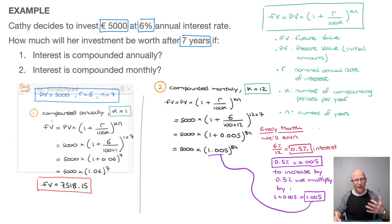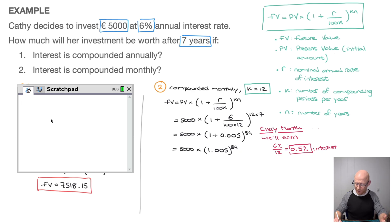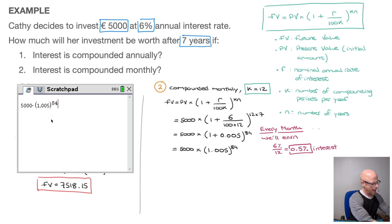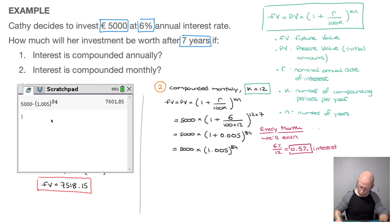Let's go back to the calculator and compute 5,000 times 1.005 raised to the power of 84. Typing that in and pressing enter, we're done. If interest is compounded monthly, the future value of Kathy's investment will be 7,601 euros and 85 cents.